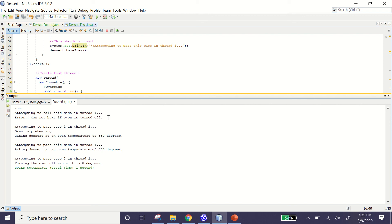For this one, we attempt to pass case one in thread two. The oven is turned on and then baked. So the oven should start preheating and then baking a dessert at an oven temperature of 350. That looks good.